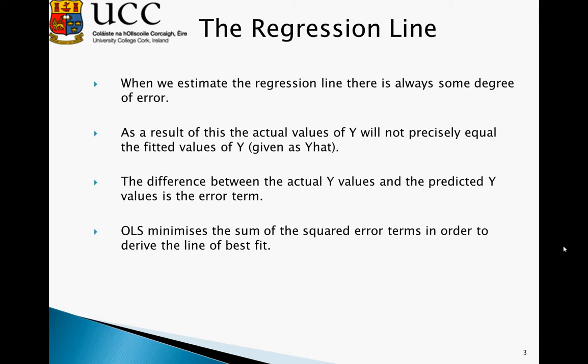If we were to plot a scatter diagram, we would see that our line of best fit does not cut precisely through each observation. There is some amount of error or scatter around this line. The difference between the actual Y values and the predicted Y values is our error term, which is included to ensure that the regression line will equal the actual values.